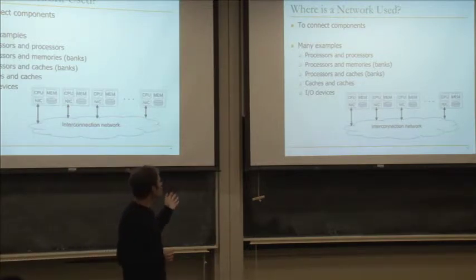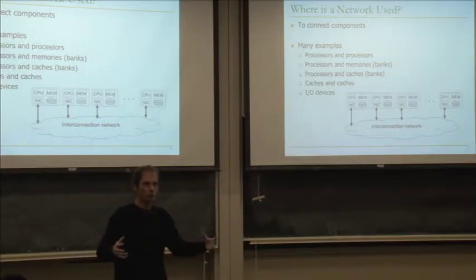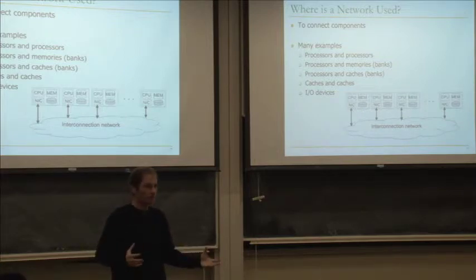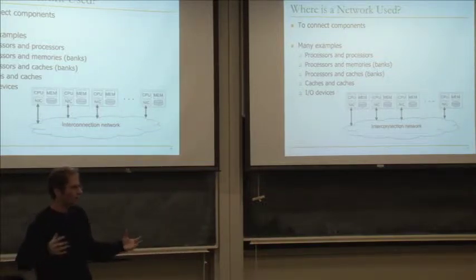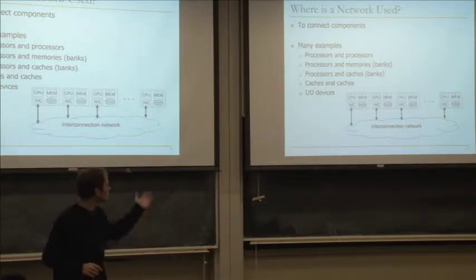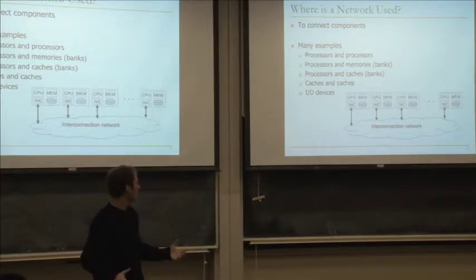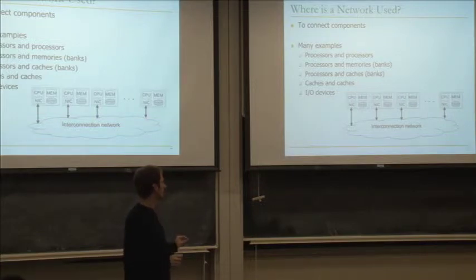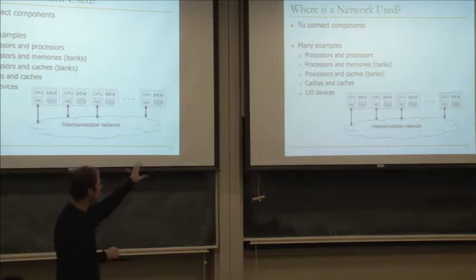So, interconnection networks. I'm going to talk about three broad issues using interconnects today. First, I'll give you an introduction and talk about some high-level terminology so we're all speaking the same language. Then today I'll hopefully cover topology — how the network is actually structured, how the nodes are connected — as well as buffering and flow control, which is how traffic actually moves through the network. Where and how are networks used? Interconnect networks are used to build large, scalable, parallel systems. At a high level, interconnects connect multiple components in the system — processors talking to each other, multiple banks of memory, caches, and IO devices like disk drives or flash. We'll abstract away and just say there are nodes in the system, and the nodes pass messages back and forth.